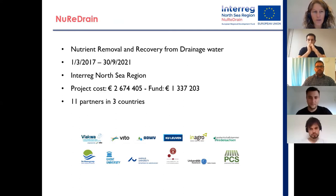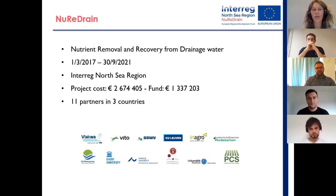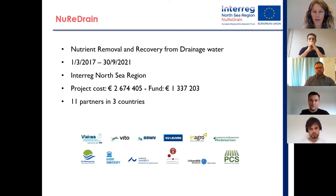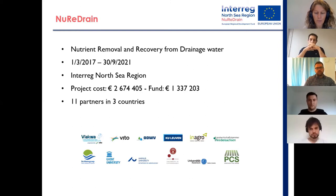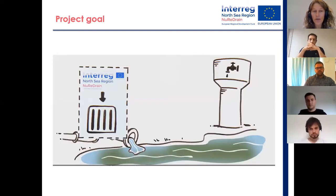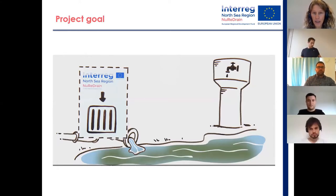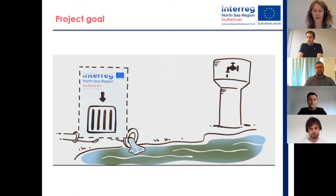I will first start with a brief introduction about the Neuridrain project — it's about nutrient removal and recovery from drainage water. This project is funded by the Interreg North Sea Region program and we are 11 partners cooperating between three countries: Denmark, Germany and Belgium. The goal of our project is to combat eutrophication and we do so by installing end-of-pipe filter technology to remove nitrates and phosphates from agricultural related waters.